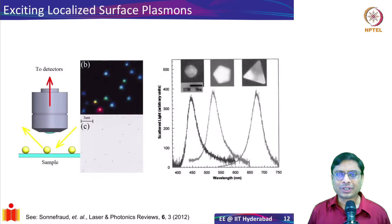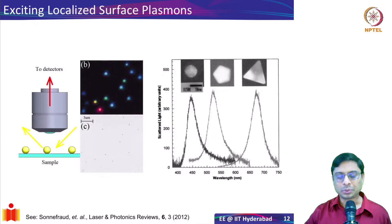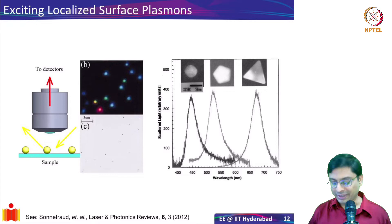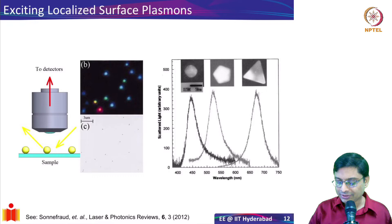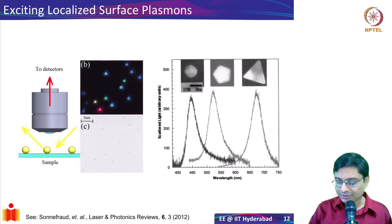There are multiple ways of doing it. One of the ways is to excite by what is known as dark field microscopy. What we can do is have a microscope and shine light at a high angle so that most of the incident light gets reflected and you don't see the direct reflection. But whatever gets scattered, you can see. This is an image taken using dark field microscopy — metal nanoparticles dispersed on a glass slide, viewed in dark field mode. It's called dark field because the background looks dark since the direct reflections are eliminated.